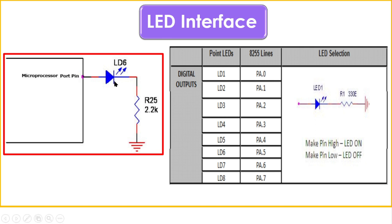If you connect a battery directly, the LED may not withstand it because the amount of current an LED can handle is limited. It can only allow a predefined amount of current. If you pass more current than that, it will burn out the LED. That's why we connect a resistor in series with the LED to limit the current. The resistor's function is to reduce the amount of current flowing in the circuit, and a higher resistance value reduces the current more.